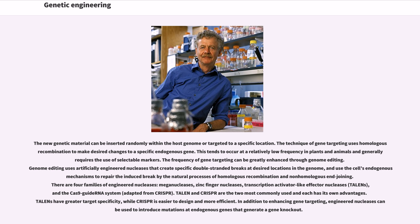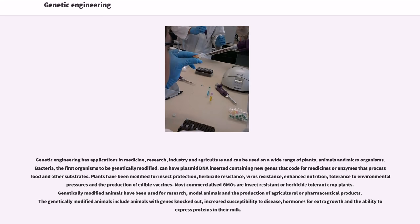Genetic engineering has applications in medicine, research, industry, and agriculture, and can be used on a wide range of plants, animals, and microorganisms. Bacteria, the first organisms to be genetically modified, can have plasmid DNA inserted containing new genes that code for medicines or enzymes that process food and other substrates. Plants have been modified for insect protection, herbicide resistance, virus resistance, enhanced nutrition, tolerance to environmental pressures, and the production of edible vaccines.